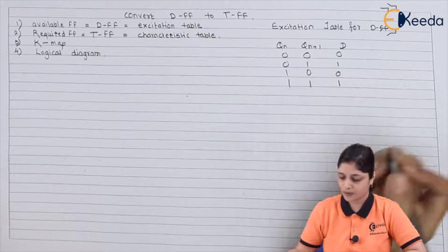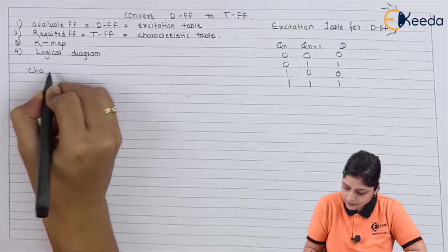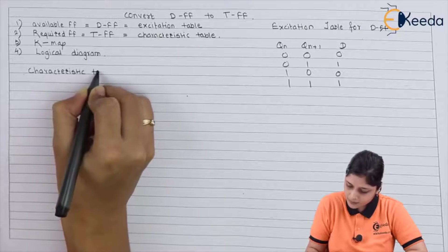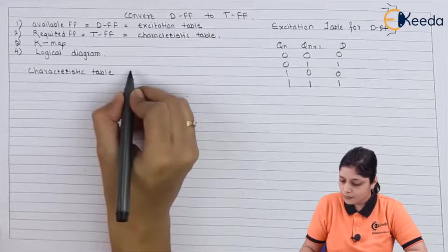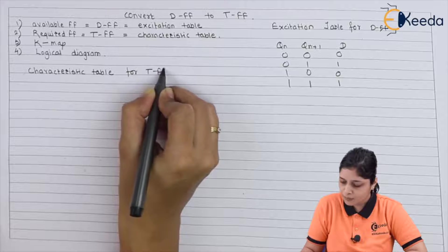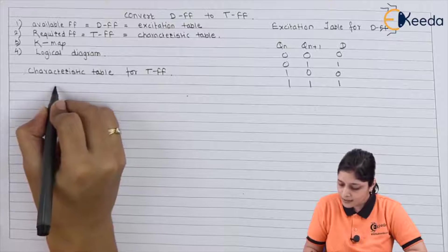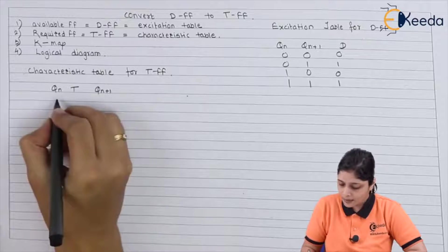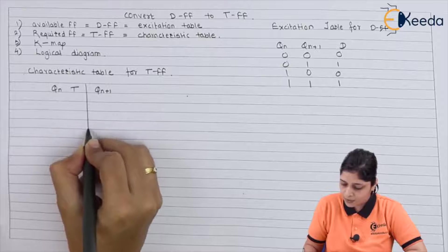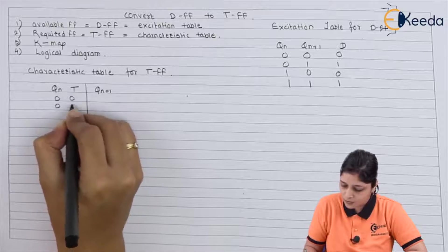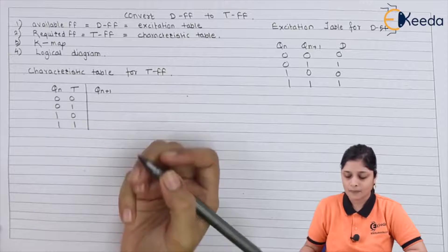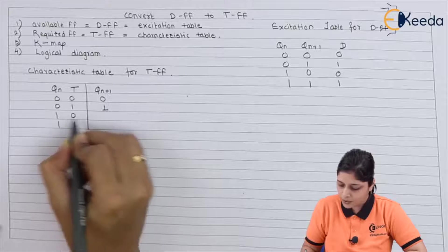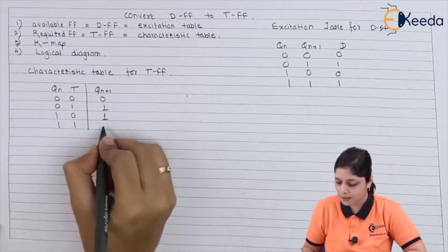After that, we can write the characteristic table for T flip-flop. The input side consists of Qn, and you have to write Qn+1. Qn and T means possible combinations are 0 0, 0 1, 1 0, 1 1. For T equals 0, it is Qn; for T equals 1, it is Qn bar.